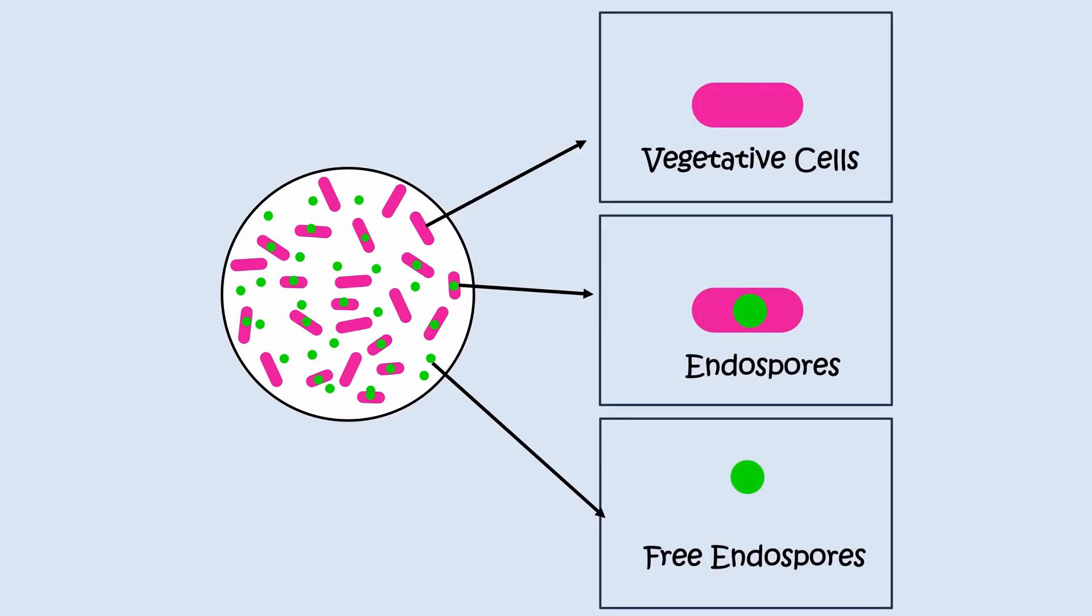You will typically observe three distinct structures under the microscope. First is vegetative cells. These are normal bacterial cells that appear pink or red in color. Second is intracellular endospores, which are green oval structures inside the vegetative cells. Third is free endospores, which are green round and oval structures found outside the cells. They were once inside a cell but have now been released.